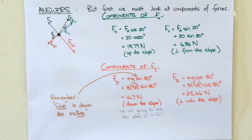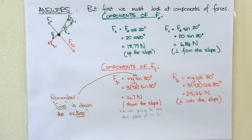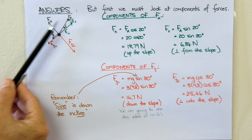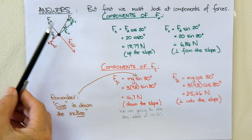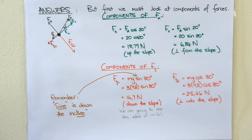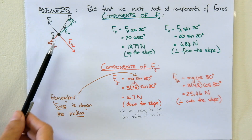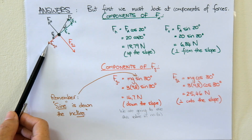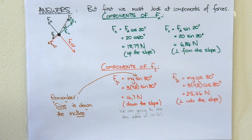Before we answer the four questions on calculating work done by the normal force, the applied force, the frictional force, and the gravitational force if the block moves 2.5 meters up the slope, I want to go through some very important information on the components of forces. There are two forces that have components. The applied force has a component parallel to the incline and a component perpendicular to the incline. The gravitational force components are Fg perpendicular to the slope and Fg parallel to the slope — the parallel one is mg sine of the angle and the perpendicular one is mg cosine.